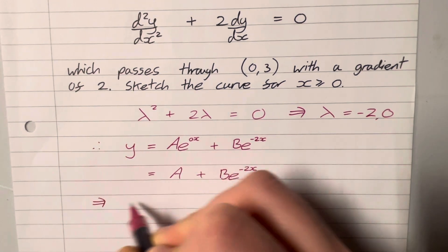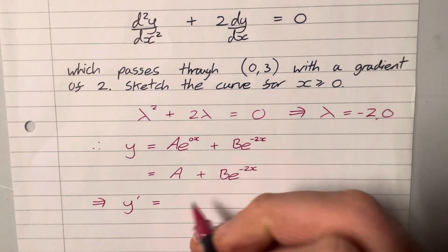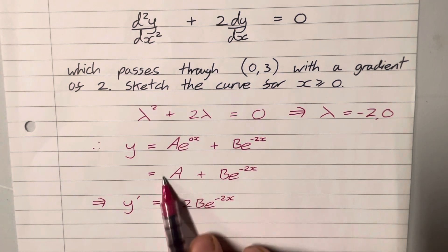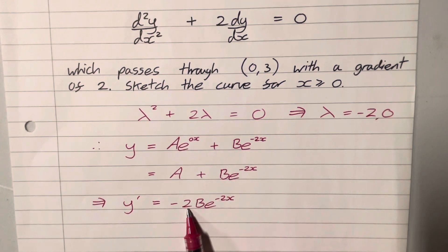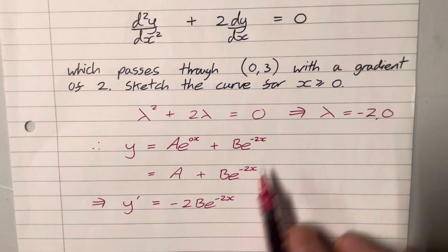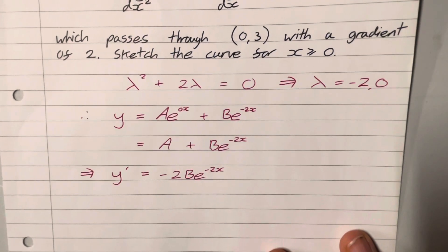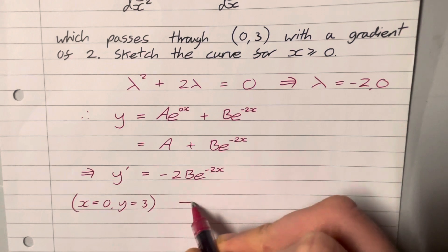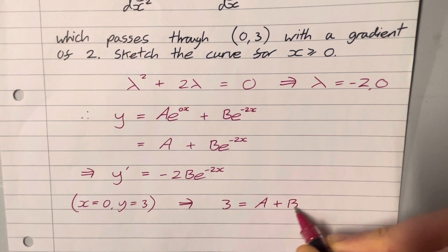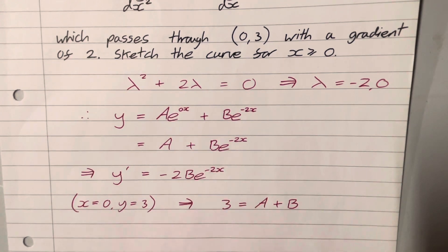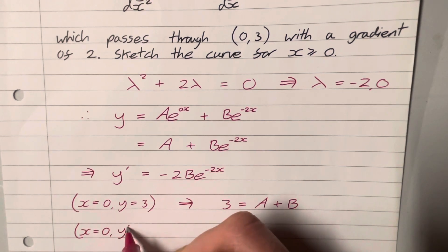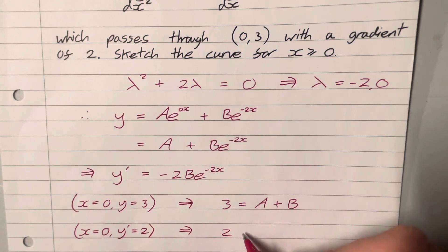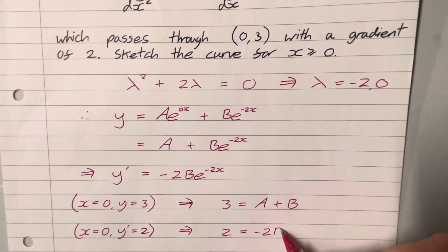So let's find dy/dx. y prime is going to be minus 2B e to the minus 2x — A disappears under differentiation as it has no x terms. Now we can use our information: the curve passes through (0, 3), so when x is 0, y equals 3. That gives us 3 equals A plus B. We also have when x equals 0, y prime equals 2, giving us 2 equals minus 2B.